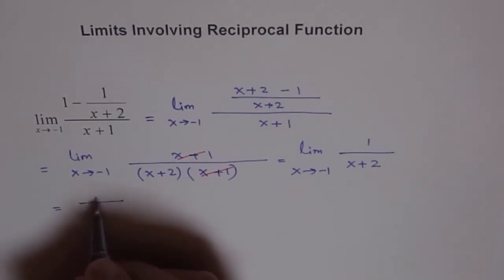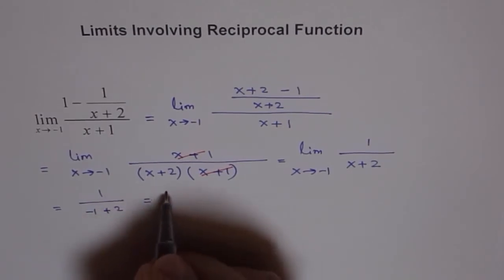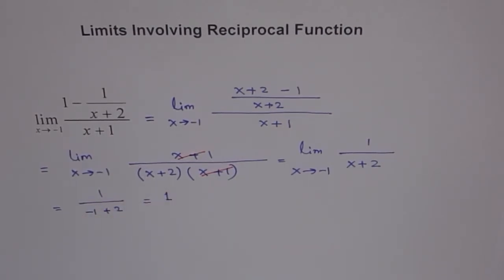Now here we can substitute minus 1 and get our answer. So if we do that we get minus 1 plus 2 which is 1. So limit of this function as x approaches minus 1 is 1.